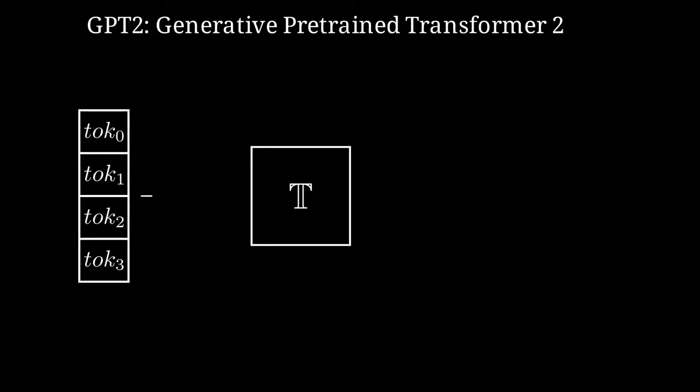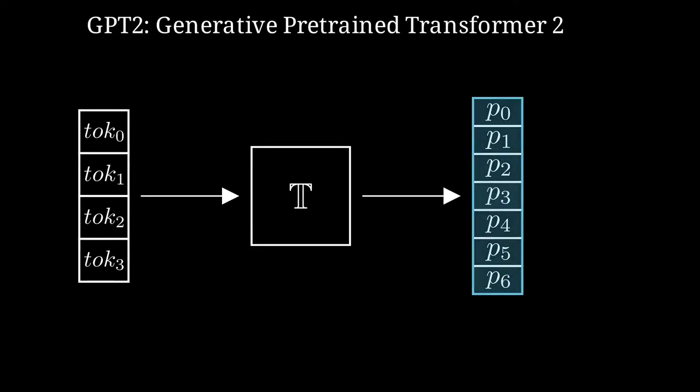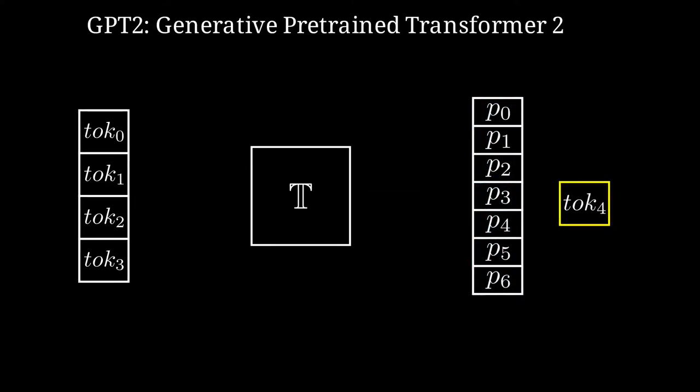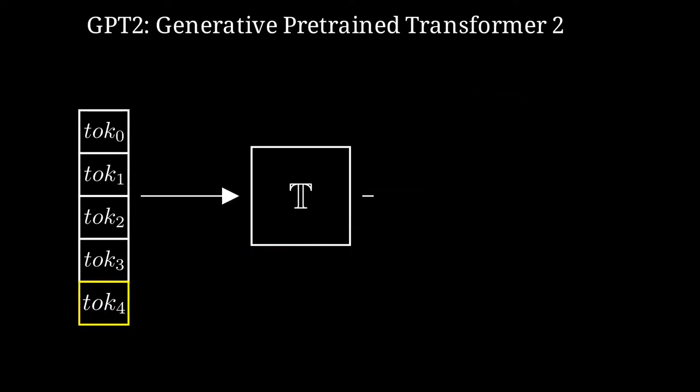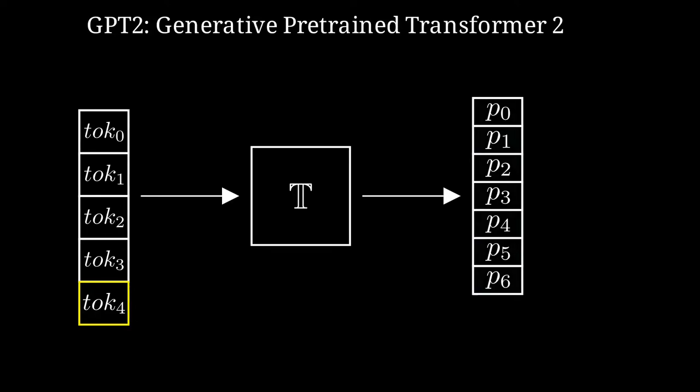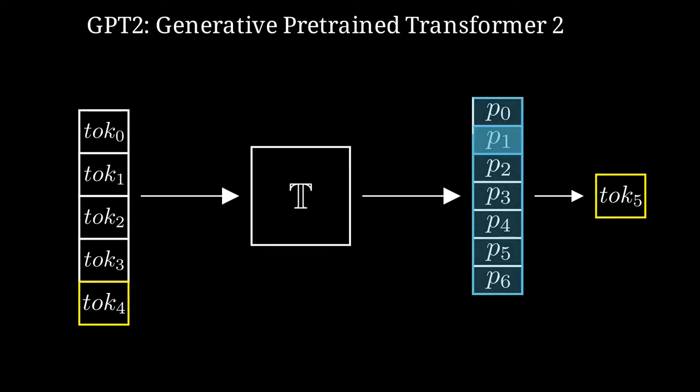To generate text, we can use the initial token as latent space and select as next token the one with the highest probability. We can then add the predicted token to the input once and keep generating new tokens until the stop token is produced, or a maximum sentence length is reached.